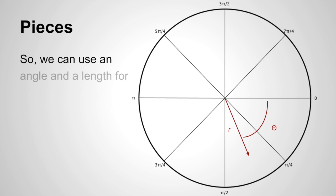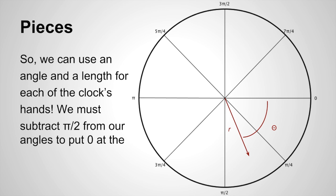We can use an angle and a length for each of the clock's hands. The only thing that we need to do is do a little bit of rotation so that our zero is actually rotated π/2 to the left, so that zero starts at the top, the 12 o'clock position.